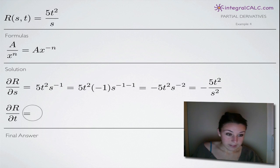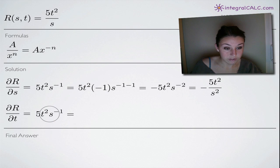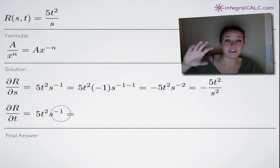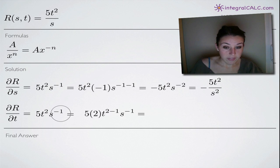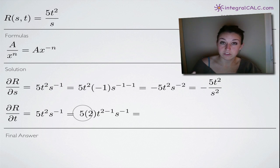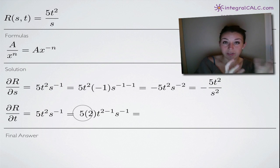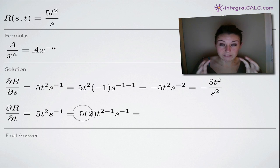Now let's take the partial derivative of r with respect to t. Again, we start with 5t squared times s to the negative one. To find the partial derivative with respect to t, we treat s as the constant and t as the variable. So s to the negative one is part of the coefficient with the five — we don't touch it, it stays the same.